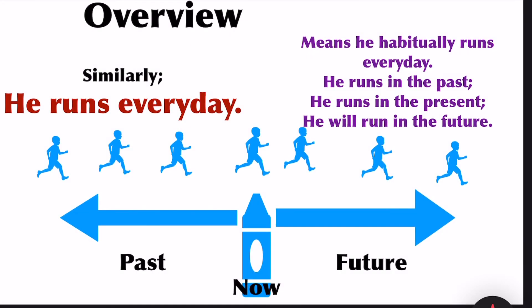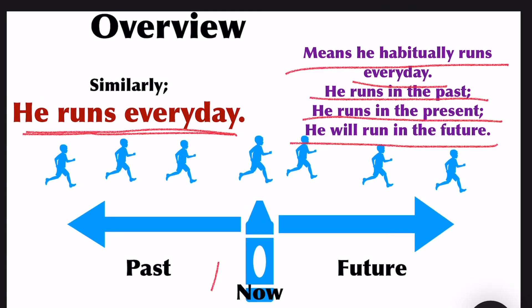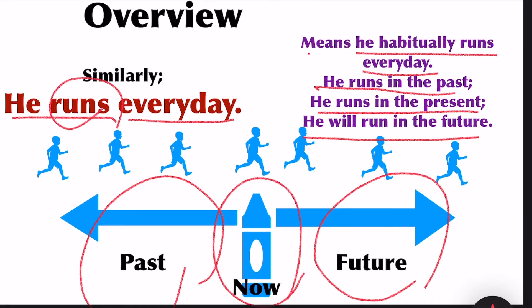Similarly, he runs every day. Running is his habit. Every day he runs means he habitually runs every day. It is his habit. He ran in the past, he runs now, and he will run in the future.